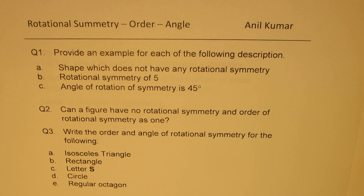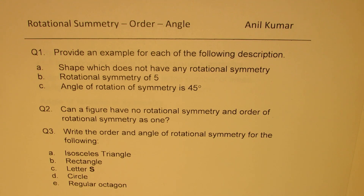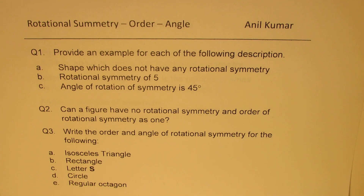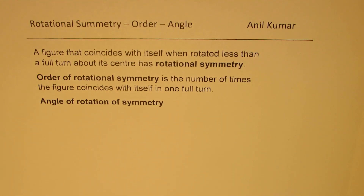Five things given are: isosceles triangle, rectangle, letter S, circle, and regular octagon. So you can pause the video, answer these questions, and then look into my suggestions. Let me begin by introducing what is rotational symmetry, and then we'll take the solution of these questions.